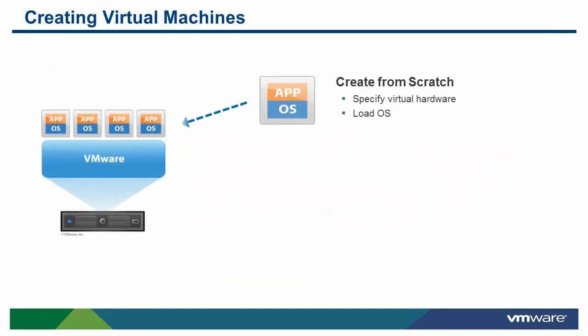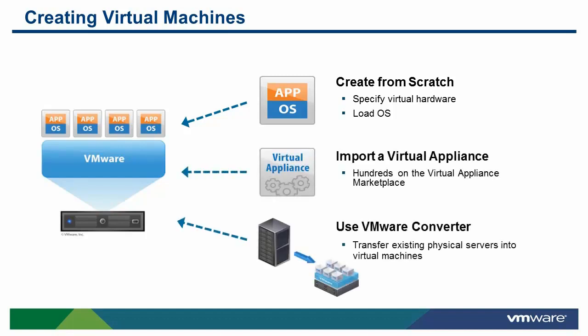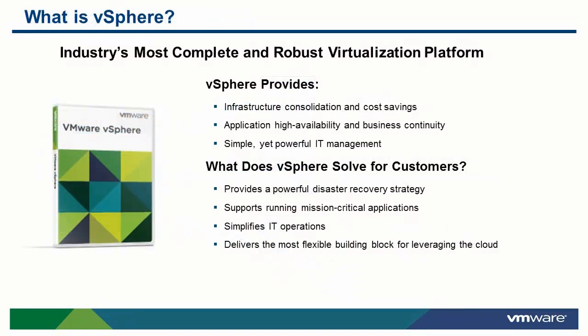So, how do you create virtual machines? You can build virtual machines from scratch by specifying the virtual hardware and loading an operating system. You can import a virtual appliance created by someone else. Or, you can utilize VMware Converter to import an existing physical machine.